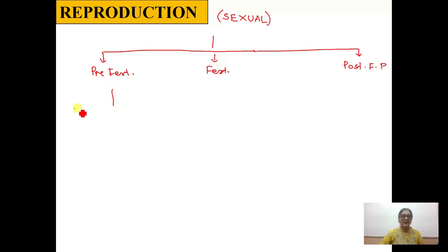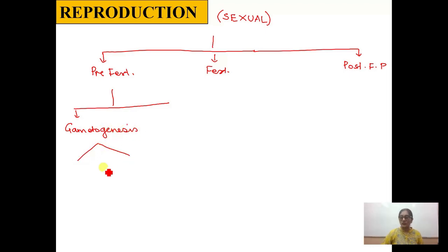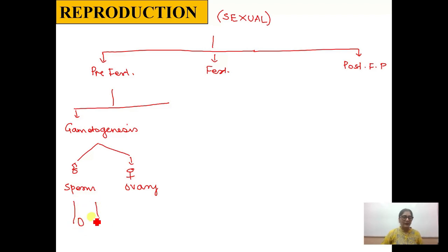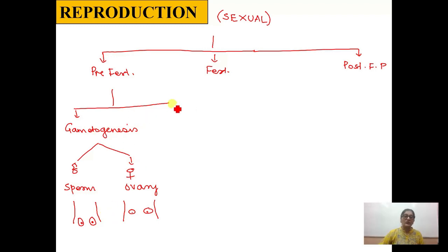In the pre-fertilization phase, two things happen. First is gametogenesis — the process by which gametes are formed. In human beings, two types of gametes are formed since there are two sexes: the male gamete, called sperm, and the female gamete, called the egg. The male gamete is formed in the male reproductive organ — the testis — and the female gamete is formed in the ovaries. Until both gametes come near each other, reproduction cannot happen, so the next step after gametogenesis is gamete transfer — the process in which the male gamete reaches the female gamete so they can fuse with each other.